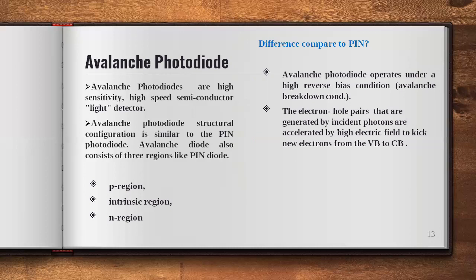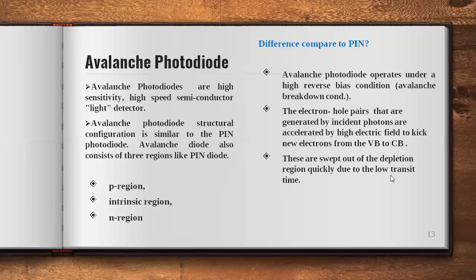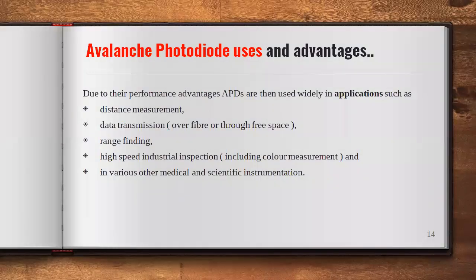Each incident photon creates one electron-hole pair in the intrinsic region. Accelerated by the electric field, these carriers hit surrounding atoms and create new electron-hole pairs — meaning the number keeps increasing, which is the internal gain. These carriers are swept out of the intrinsic region quickly due to low transit time enabled by the high electric field. Current sensitivity increases 30 to 100 times due to the avalanche operation. Because of its high sensitivity and high speed, it is used in distance measurement, data transmission, high speed industrial inspection, and medical and scientific instrumentation.